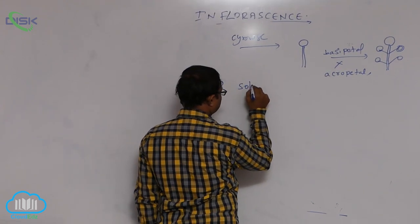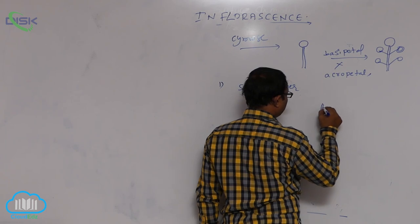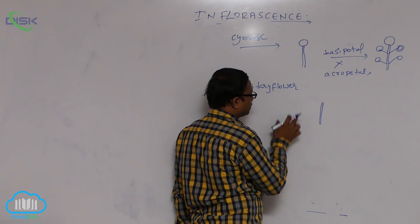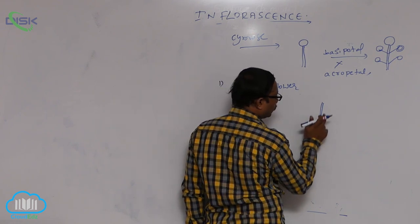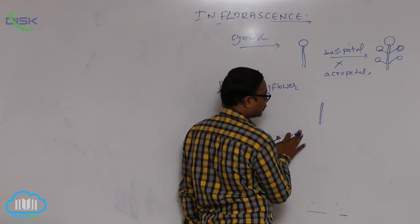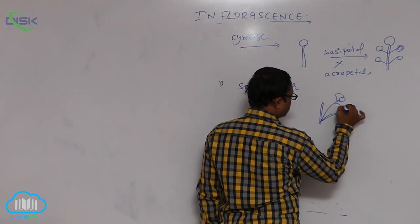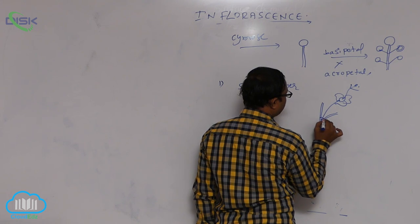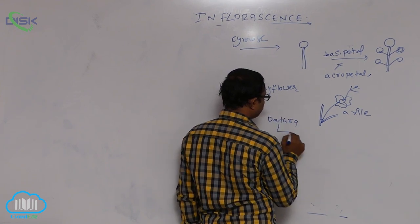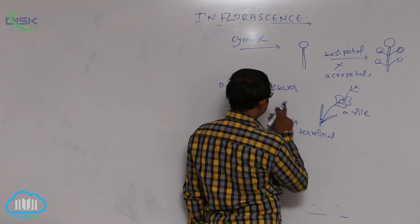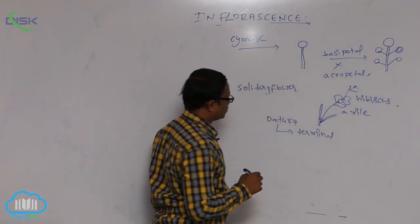Cymose inflorescence is of different types. First is solitary flower — at the tip of the peduncle, only a single flower is formed. It appears just like a single flower inflorescence. At the tip of the peduncle, only a single flower is present — that is known as solitary flower. If the solitary flower is formed from the axial part, example is Hibiscus. In Datura, the solitary flower is formed from the terminal — terminal solitary flower: Datura; axial solitary flower: Hibiscus.